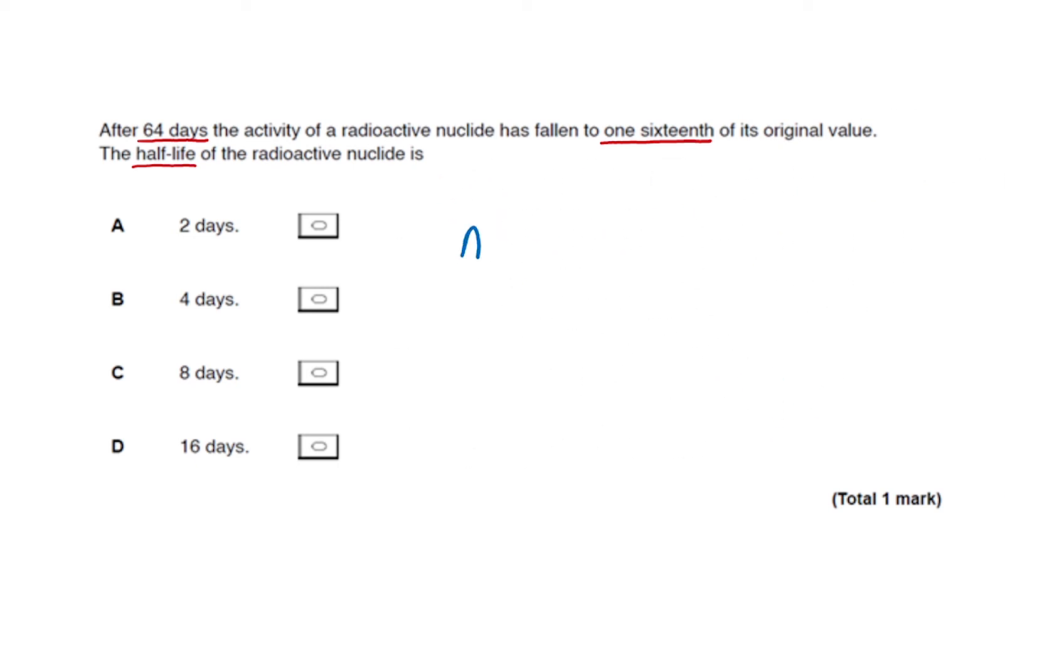Alternatively, we can use the equation: activity is equal to initial activity times 2 to the power of negative time divided by half-life.